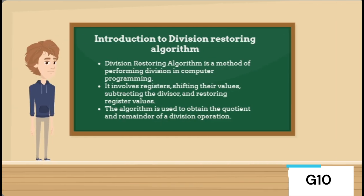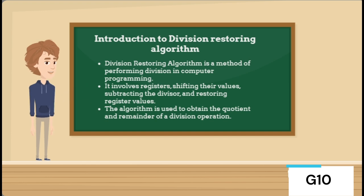Let me introduce you to the restoring division algorithm. The division restoring algorithm is a method of performing division in computer programming. It involves registers shifting their values, subtracting the divisor, and restoring register values. This algorithm is used to obtain the quotient and remainder of a division operation.